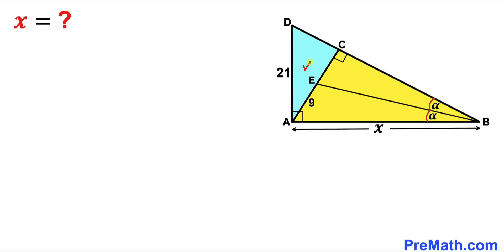In this video we have blue and yellow triangles fully confined in a big right triangle ABD. EB is the angle bisector in the yellow triangle, giving us two equal angles alpha. The side length AE is 9 units, AD is 21 units, and AB is represented by x units. Our task is to find the value of x.